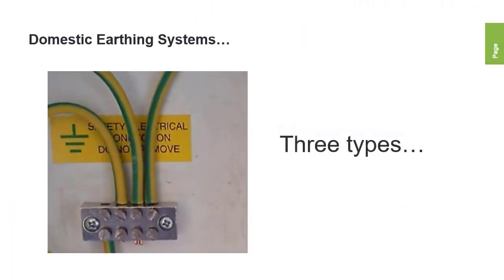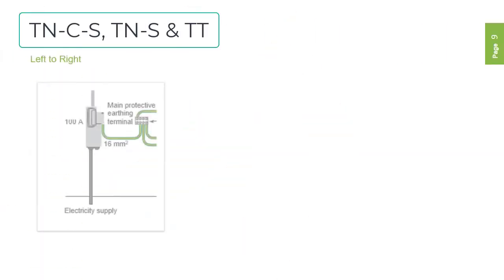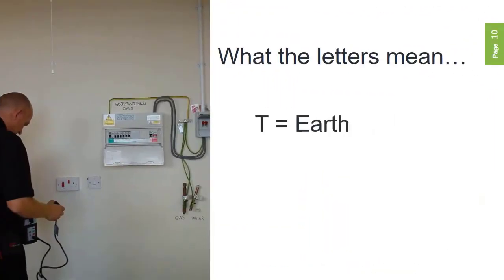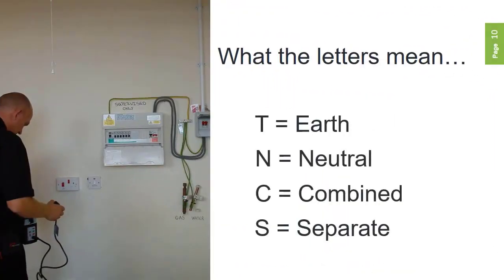Domestic electrical installations in the UK have one of three types of earthing systems: TN-CS, TNS, and TT. Before we proceed, let's look at what each of these letters mean. T comes from the old Latin word terra, as in terra firma. N is for neutral, C means combined, and S for separate.